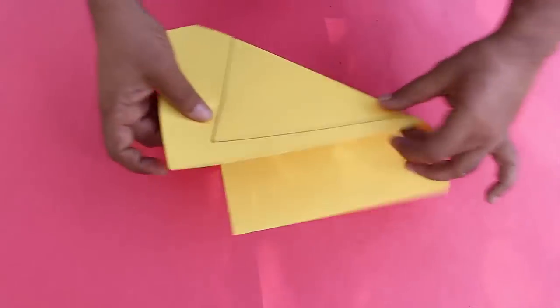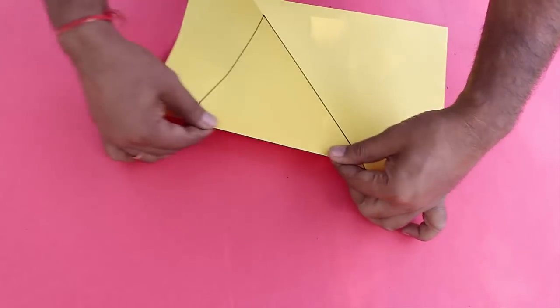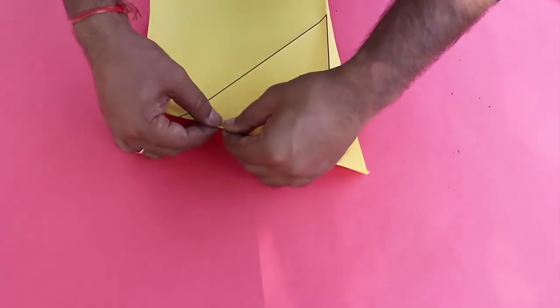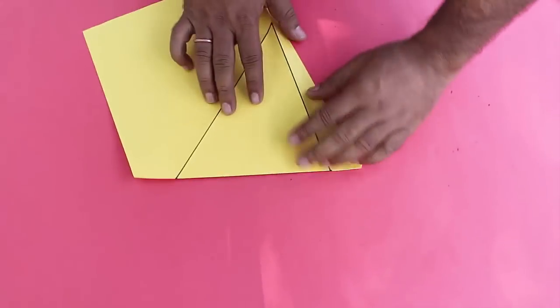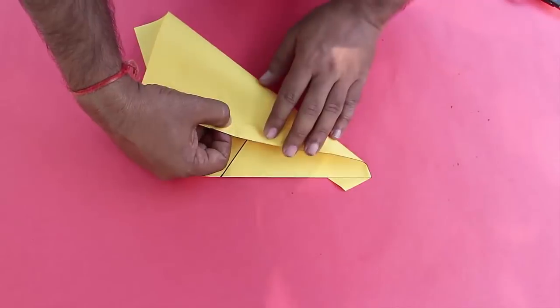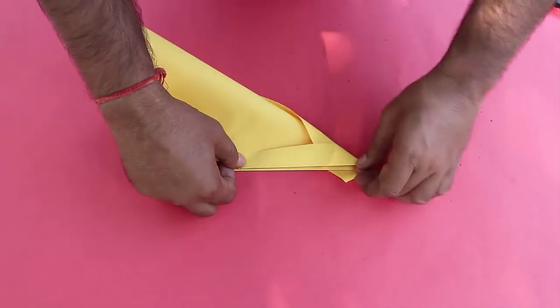We will first fold the paper along the sides of the triangle, and then once we are done with that, we will place one side on top of the other, thereby dividing the angle in two equal parts.